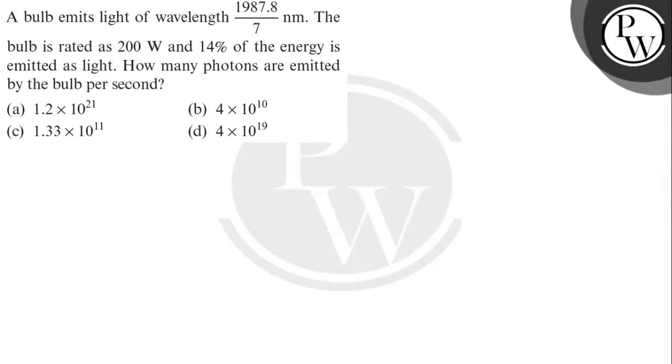Hello, let's see this question. The question says a bulb emits light of wavelength 1987.8/7 nanometers. The bulb is rated as 200 watts and 14% of the energy is emitted as light. How many photons are emitted by the bulb per second? So here, we have to calculate the number of photons.